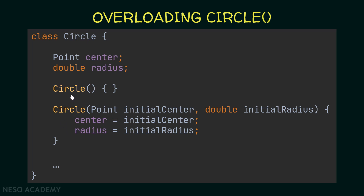Now we have two ways to create Circle objects. Using the first constructor, the center and radius will have default values — center will be null and radius will be zero. Using the second constructor, the values of center and radius will be provided by the user.